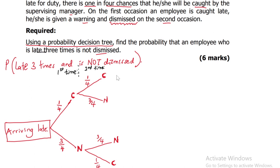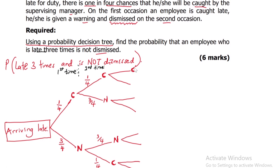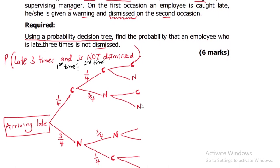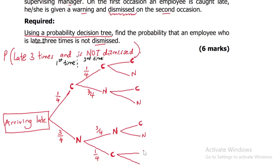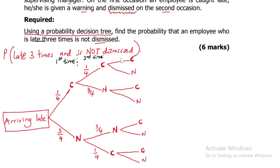We extend the tree one more time for the third occasion. From each branch, there are still two possibilities: either caught or not caught. The probability of being caught is one quarter and not caught is three quarters, applied to each branch at this third level. There are also such probability distributions to not confuse this with picking items from a box — the interpretation there would be different.